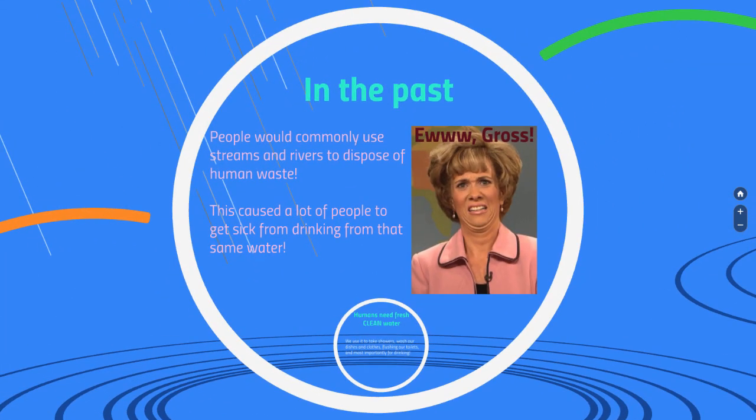In the past, people would commonly use streams and rivers to dispose of human waste. They didn't want waste in their streets, so out of sight, out of mind — they'd just put it in the rivers and streams. But while the water looked nice and clean, this actually caused a lot of people to get sick because they still used that same river or stream for drinking water. So they were disposing waste and drinking from the same source, which is really gross.